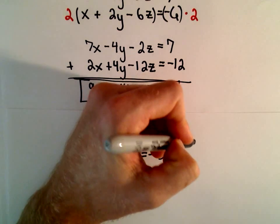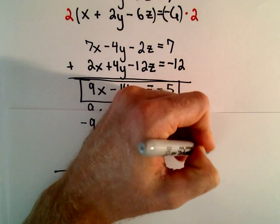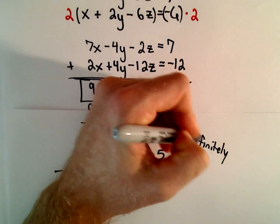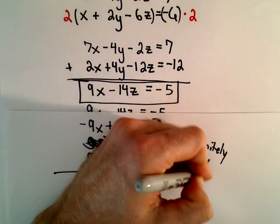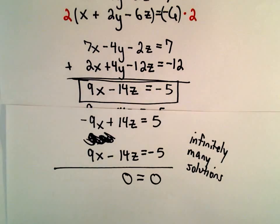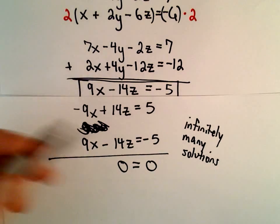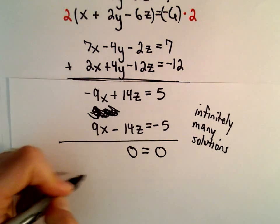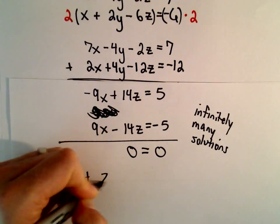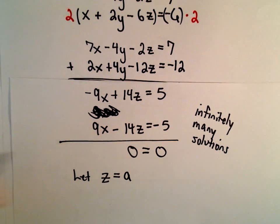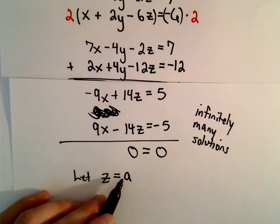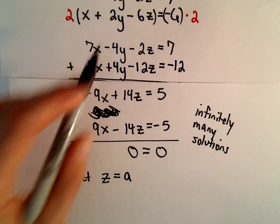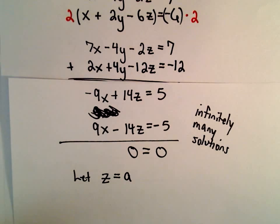And what this tells us is that there's going to be infinitely many solutions. So what we do is we set one of our variables equal to a constant. I'm going to say let z equal the value positive a, and then what I'm going to do is I'm going to go back and solve for x in terms of a, and then I'll do the same thing. I'll solve for y in terms of a.